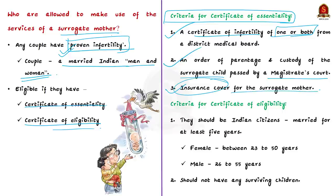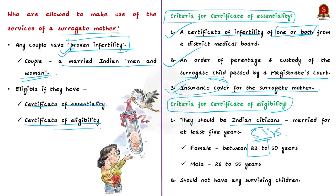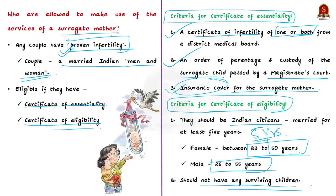The couple can obtain an eligibility certificate if they fulfill three conditions: first, they must be Indian citizens married for at least five years; second, the female must be between 23 to 50 years and the male between 26 to 55 years; and third, they should not have any surviving children — whether biological, adopted, or surrogate. However, this provision does not include a child who is mentally or physically challenged or suffers from a life-threatening disorder or fatal illness.